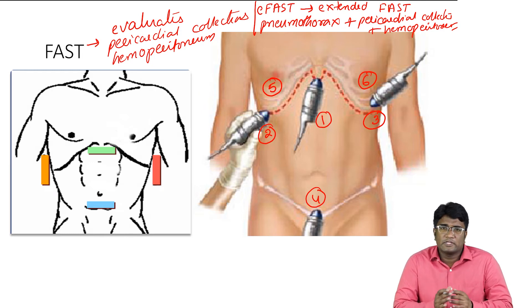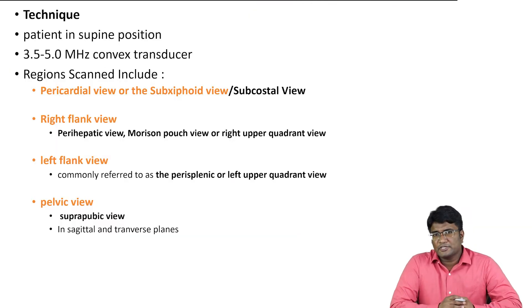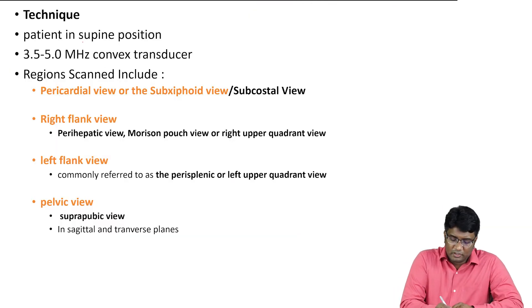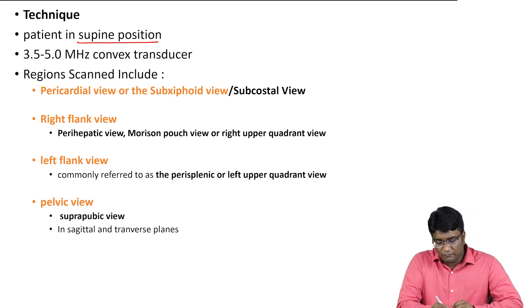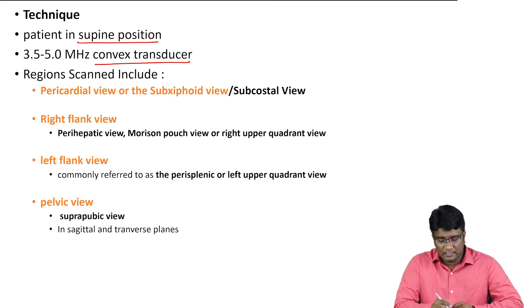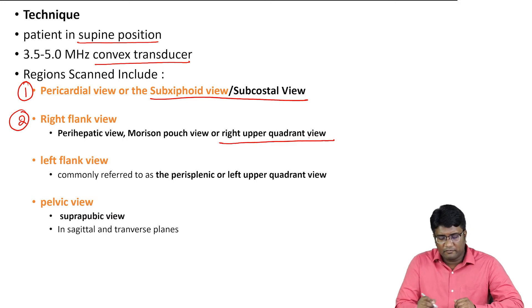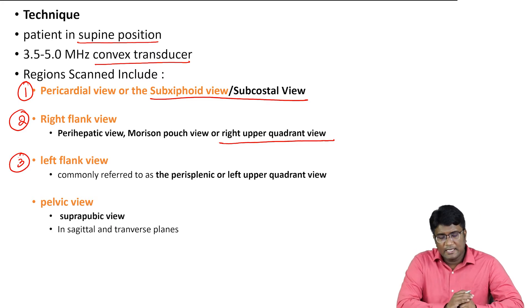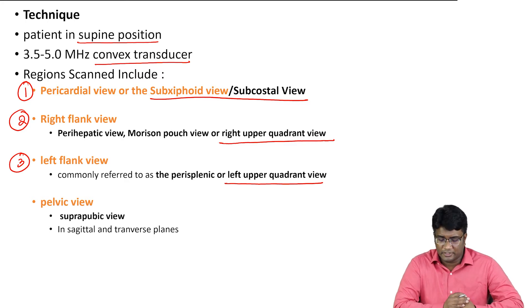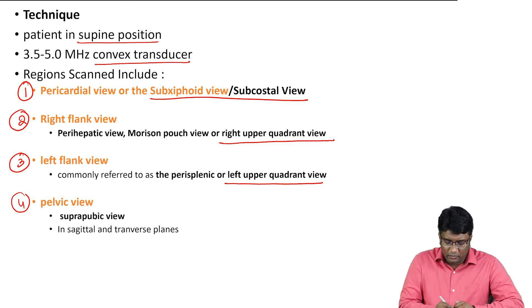Today when we get a patient of abdominal trauma, we try to evaluate initially with E-FAST. In FAST, when the patient of abdominal trauma is in supine position, we use a convex ultrasound probe and evaluate four areas: the pericardial region through a sub-xiphoid or subcostal view, the right flank or right upper quadrant view for the perihepatic region, the left flank or left upper quadrant view for the perisplenic region, and the pelvic view.